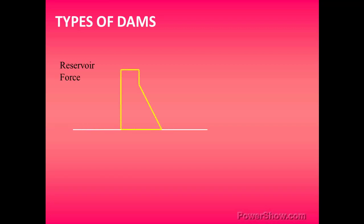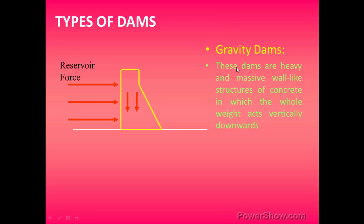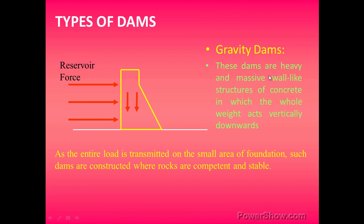Next we have types of dams. The first type is gravity dams. Gravity dams are heavy and massive wall-like structures of concrete in which the whole weight acts vertically downward. As the entire load is transmitted on a small area of foundation, such dams are constructed where rocks are competent and stable. A gravity dam balances all the forces — including reservoir forces — applied on it by its own weight. They are suitable when the foundation rocks are competent and stable.